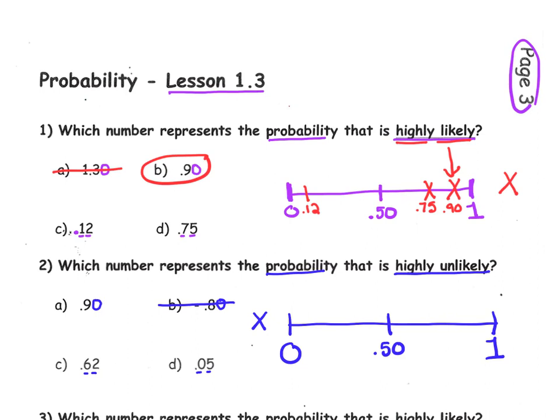Let's plot our other possibilities. Choice A would be approximately here. Plot these with me, please. Choice C would be just about here. And choice D is quite close to 0. And remember, the closer you get to 0, the more unlikely an event is. So that would be choice D. Highly unlikely.